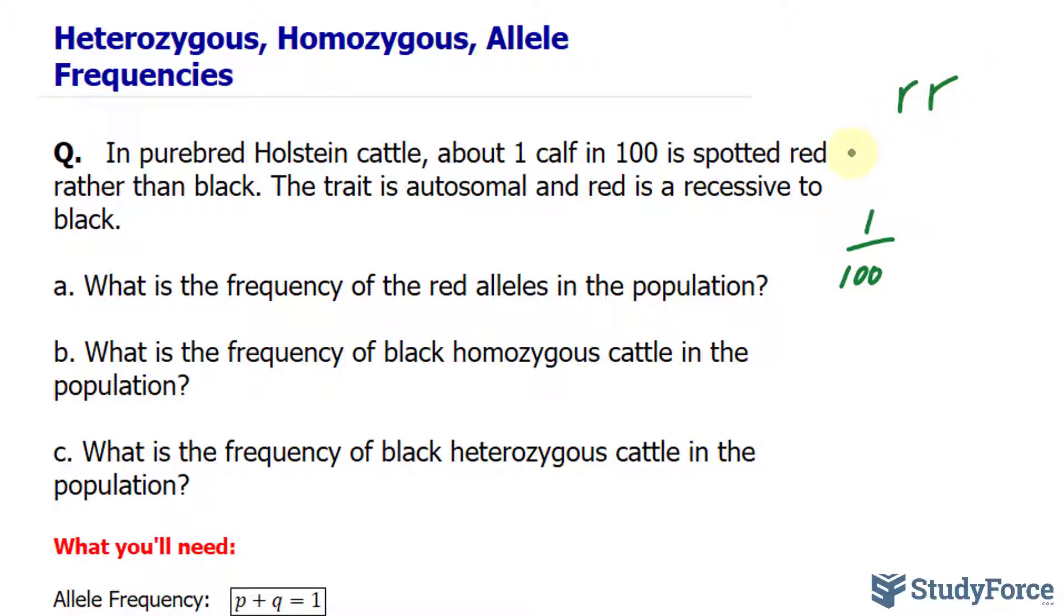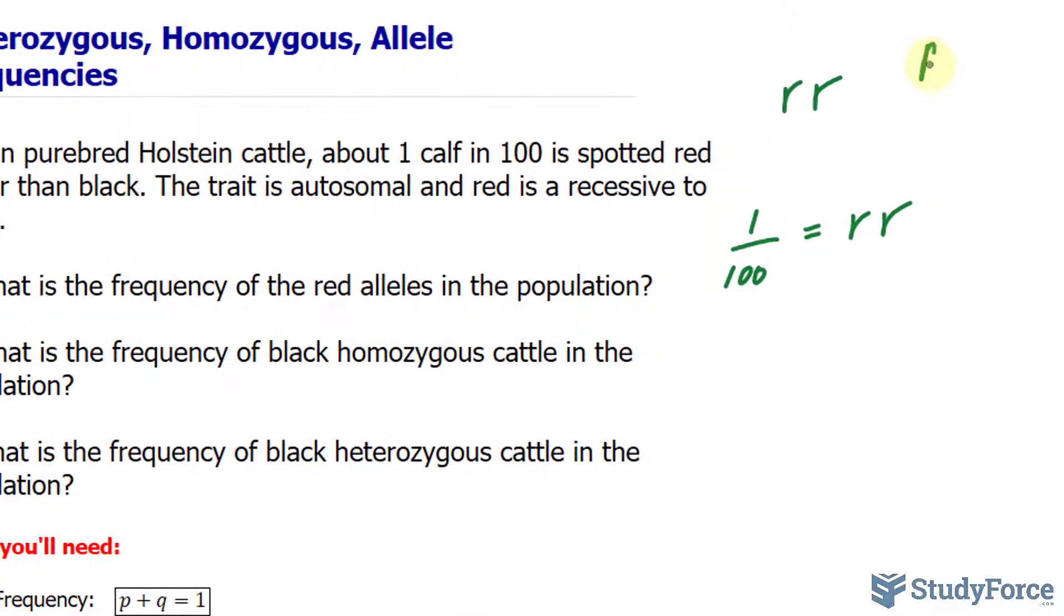We'll call the recessive allele little r. So the genotype of a red spotted calf is two little r's. Whereas a black spotted calf would either be big R, big R, or big R, little r.